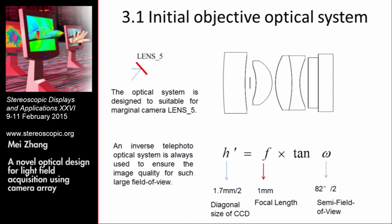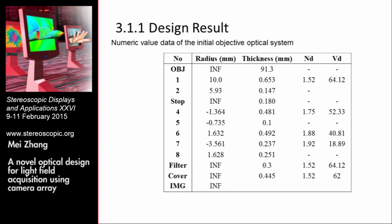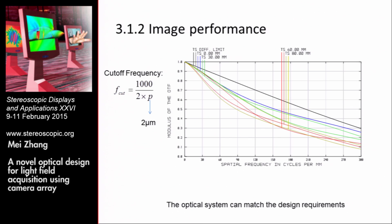An inverse telephoto optical system is always used to ensure image quality for such a large field of view. There are about four elements involved in our system. We perform the optimization using optical design software. The objective distance is set as 91.3 millimeters to match the requirements of the side camera. We use MTF curves to evaluate image performance, and the cutoff frequency depends on pixel size. From the calculation, the cutoff frequency is about 250 line pairs per millimeter, and the MTF curve values are all about 0.15, so the optical system matches the design requirements well.